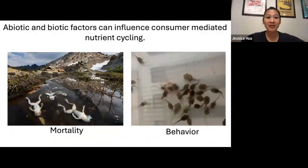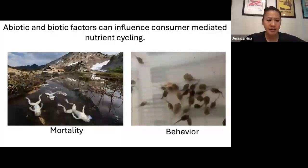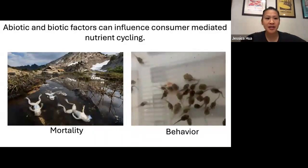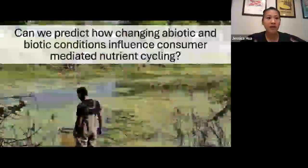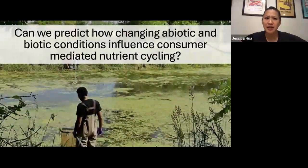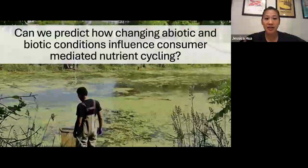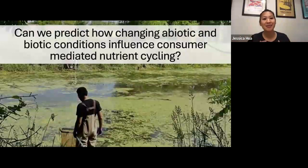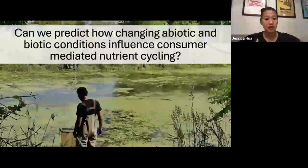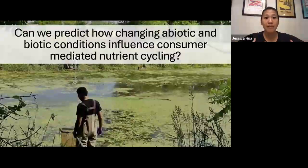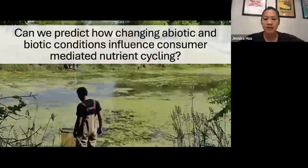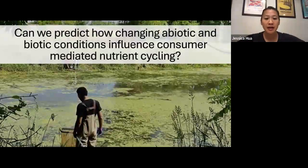Alone, various factors like pollutants and disease can have huge impacts on nutrient cycling. But a central challenge is that in nature, none of these factors exist in isolation — they often interact with each other. So a major challenge to address is: can we predict how abiotic and biotic conditions, multiple factors alone and in combination, influence consumer-mediated nutrient cycling? The goal of this presentation is to show how my lab approaches that broad question: as the world rapidly changes, how do we predict how different factors influence important ecological processes like nutrient cycling?